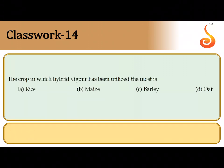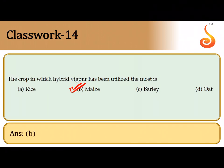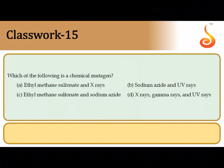The fourteenth question: the crop in which hybrid vigor has been utilized the most is option B — maize. Maize has been exploited to the maximum extent in plant breeding, and we have reaped the greatest benefits of hybrid vigor from this particular plant.